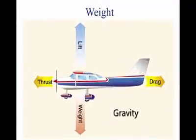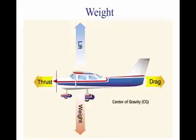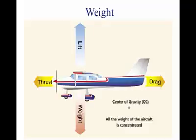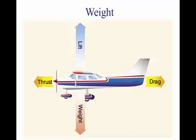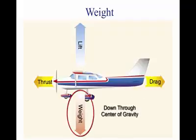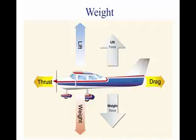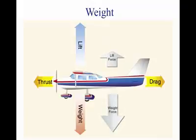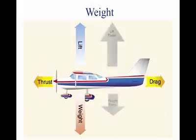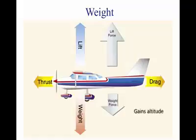Gravity is the pulling force that tends to draw all bodies to the center of the earth. The center of gravity may be considered as a point at which all the weight of the aircraft is concentrated. If the aircraft were supported at its exact center of gravity, it would balance in any attitude. This weight force acts downward through the airplane's center of gravity. In stabilized level flight, where the lift force is equal to the weight force, the aircraft is in a state of equilibrium and neither gains nor loses altitude. If lift becomes less than weight, the aircraft loses altitude; when lift is greater than weight, the aircraft gains altitude.